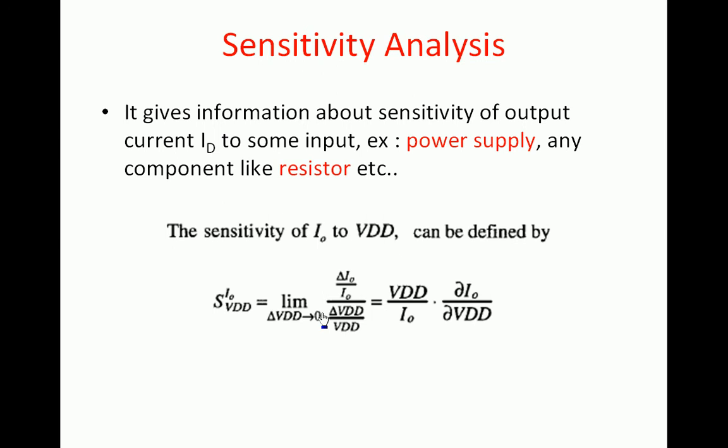Before that, we are going to discuss different analysis techniques: sensitivity analysis, temperature analysis, and transient response. First is sensitivity analysis. Sensitivity analysis gives information about the sensitivity of output current to some parameter — that may be either the power supply or a component of the current mirror such as a resistor, or any other component connected in the circuit.